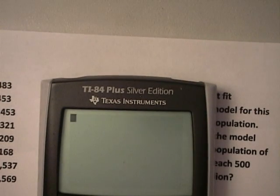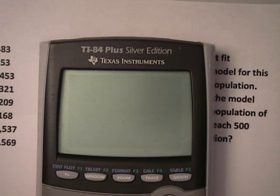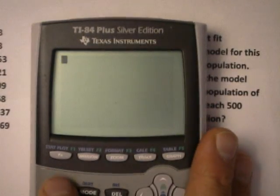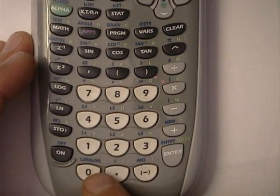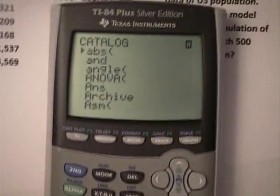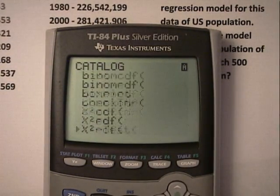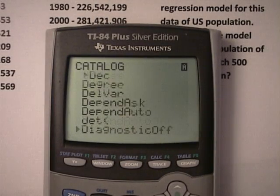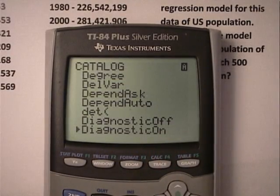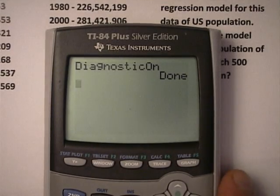Before we get into that, we want to turn something on here. It's called the diagnostics, because we want to be able to see what's called the correlation coefficient, or the squared correlation coefficient. How do you do that? You do second, and catalog, which is all the way down here at the bottom. And then what happens? You get a big long list, and we're trying to get down to one that says diagnostic on. You can scroll down. You can actually type a D if you want to get there quicker, but I'll scroll for the benefit of all. And there it is. Diagnostic on. All we have to do is press enter, and enter one more time, and it says done. Make sure your diagnostic is on.